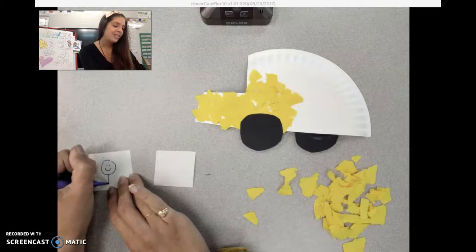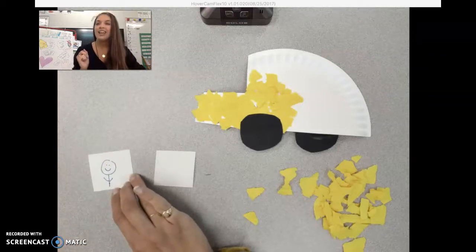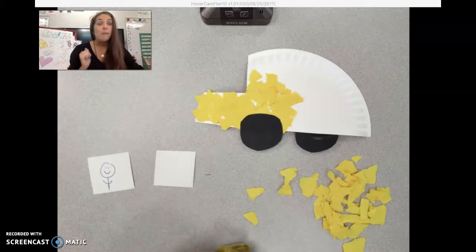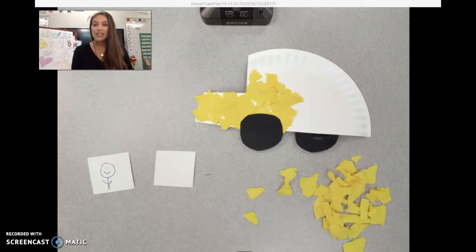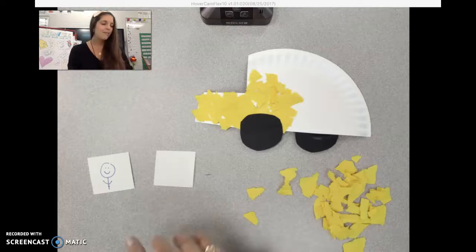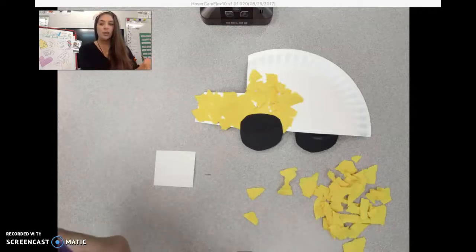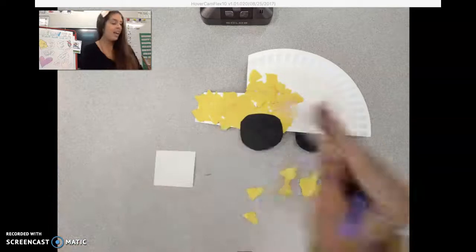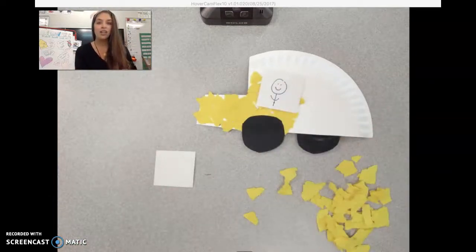This is what my friend looks like. I'm just going to do a stick person. You can color it, you can use a marker, you can do whatever you want for your friend on your bus. Then you're going to put glue on the back and you will stick it on your bus.